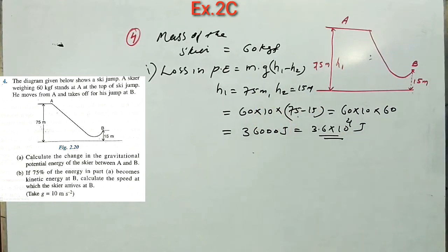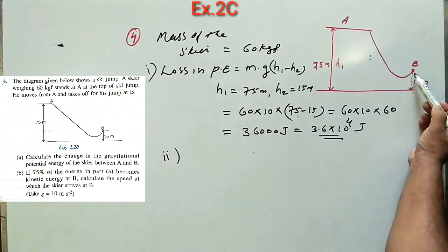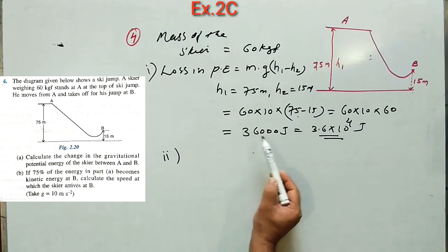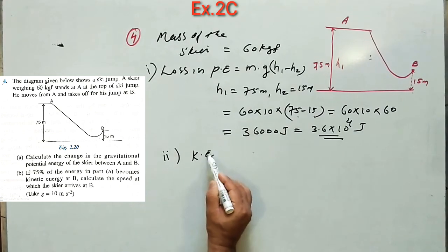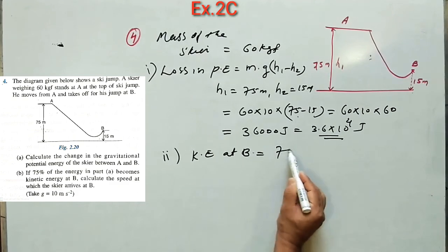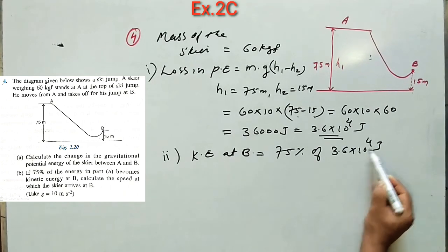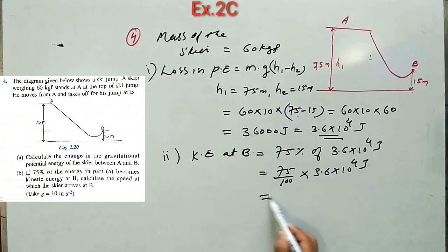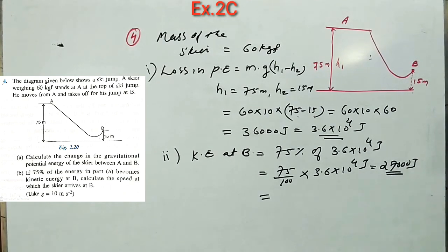For Part 2: if 75% of the energy from Part A becomes kinetic energy at point B, then the kinetic energy at B equals 75% of 36,000 joules. So KE at B = (75/100) × 3.6 × 10⁴ joules = 27,000 joules.